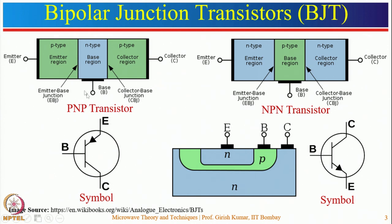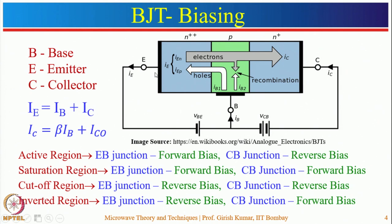In PNP transistors, current flows from emitter to base; in NPN, current flows from base to emitter. These regions form two junctions: the emitter-base junction and the collector-base junction. When the transistor is biased using DC, these junctions can be forward biased or reverse biased, placing the transistor into four operating regions: active, saturation, cutoff, and inverted.